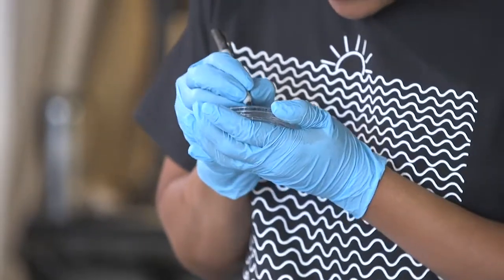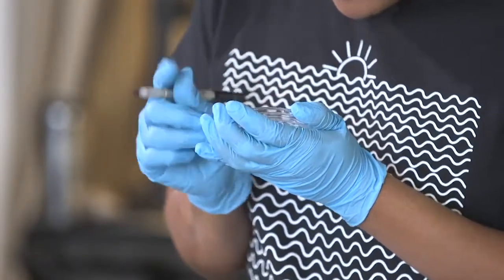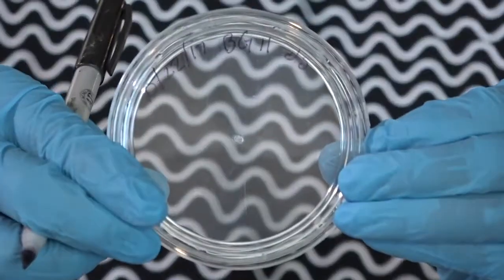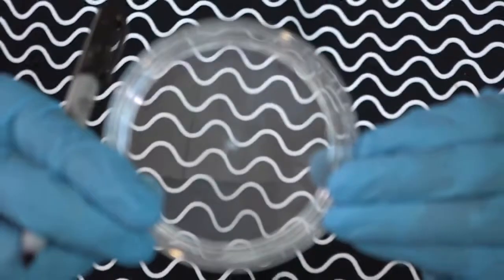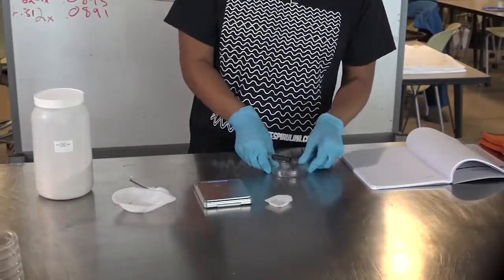You'll write the date, the name of the media, and put your initials around the edge. And you'll do that on all the plates that you're going to pour.